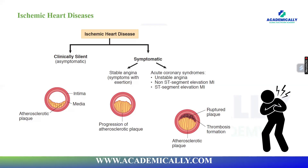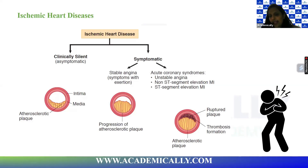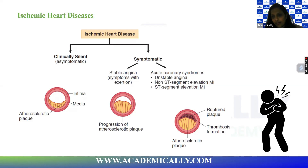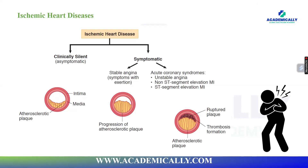In unstable angina, the patient will have persistent pain even at rest. In acute coronary syndrome generally, there will be persistent pain. To differentiate the three types of ACS, you first do an ECG, and then check cardiac biomarkers — troponin. ECG comes before cardiac markers.